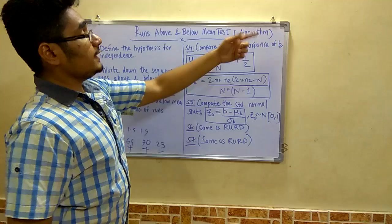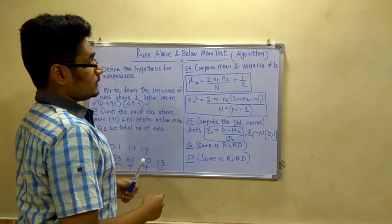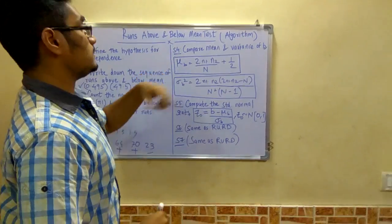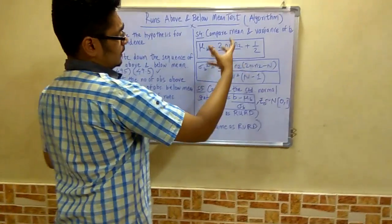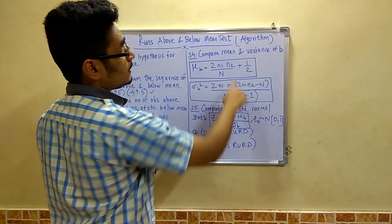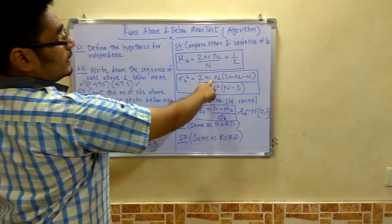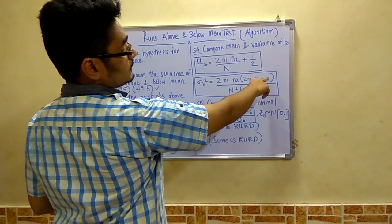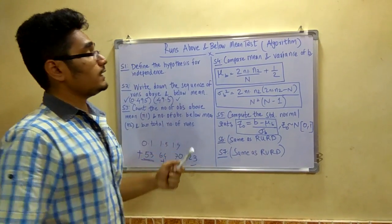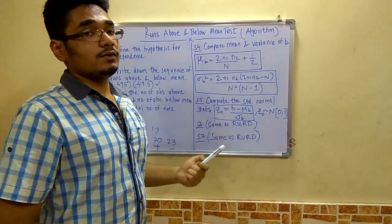Now after this you have to compute the mean and variance of b. In runs up and runs down you had mu a and sigma a square. Now in this you have mu b and sigma b square. Now this formula is a bit big formula. You have to memorize it. That is 2 times n1, n2 divided by capital N plus half. That is the mu b. And variance 2 times n1 into n2 multiplied by 2 times n1 into n2 minus capital N, divided by n square into n minus 1. Now this formula you have to by heart. Make sure that you memorize the formula very well and then implement in your problem.